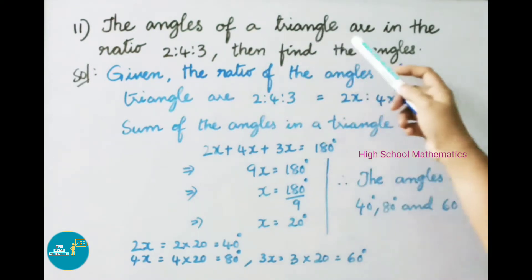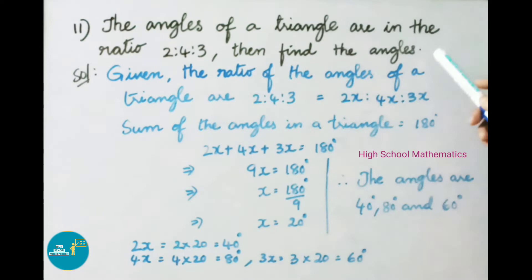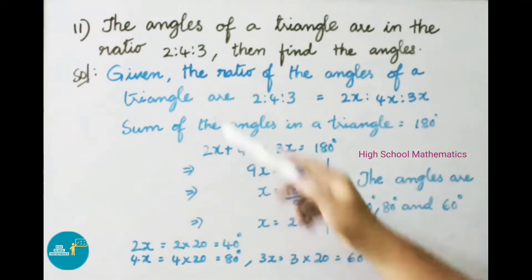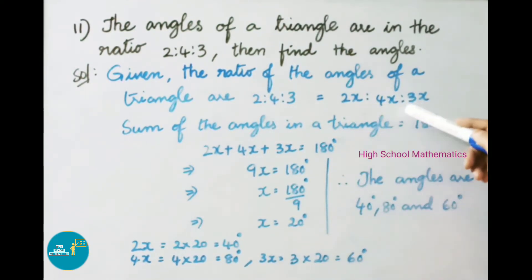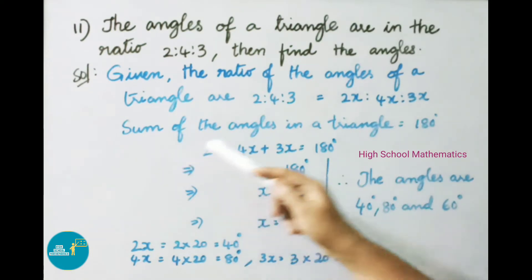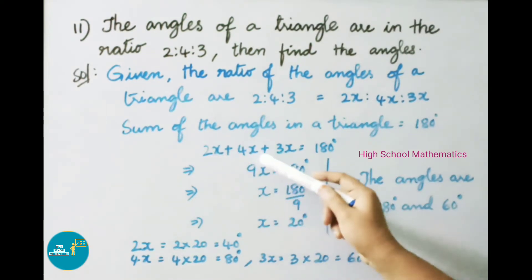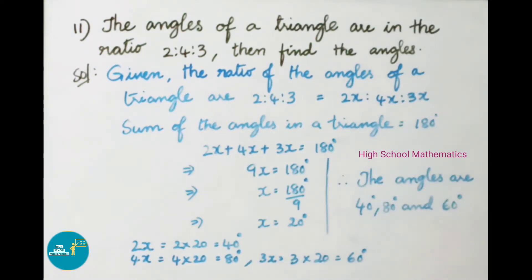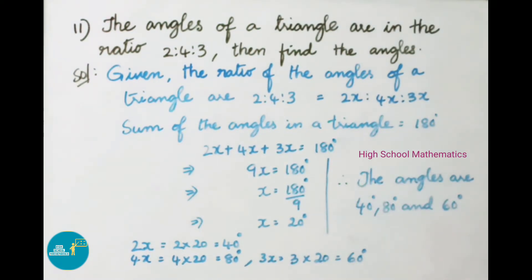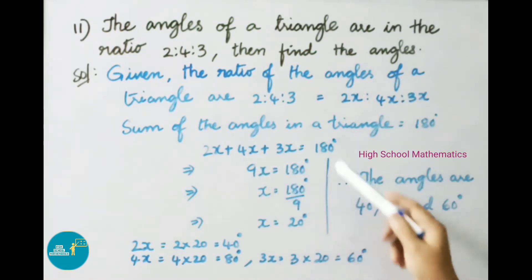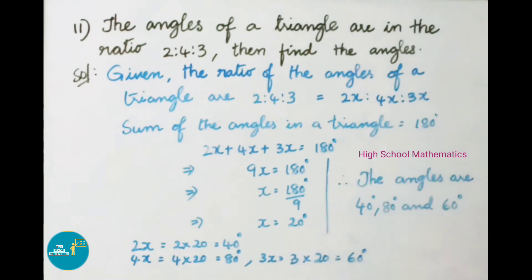Question number 11: The angles of a triangle are in the ratio 2:4:3. Find the 3 angles. Let the angles be 2x, 4x, and 3x. The sum of angles in a triangle equals 180 degrees, so 2x plus 4x plus 3x equals 180 degrees, giving 9x equals 180 degrees. Transposing, x equals 180 divided by 9, so x equals 20 degrees.